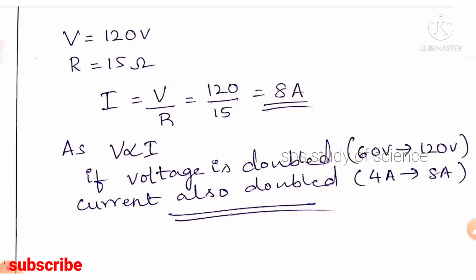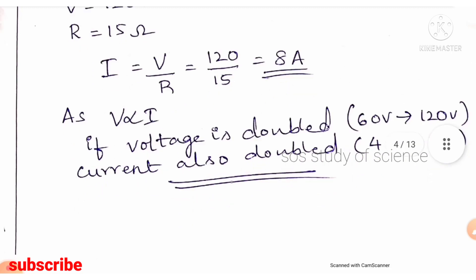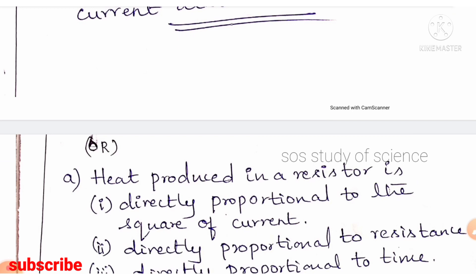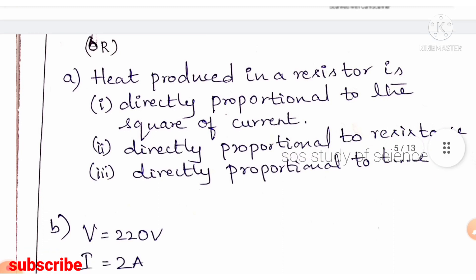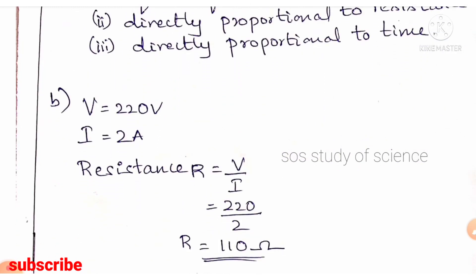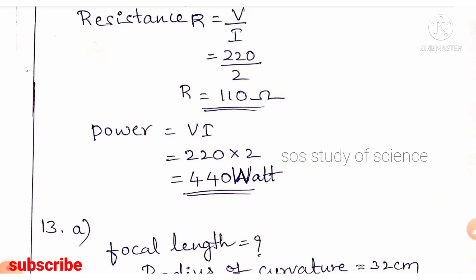Alternatively, Joule's law of heating: heat produced is directly proportional to the square of current, directly proportional to resistance, and directly proportional to time. Problem: an electric bulb connected to a 220 V generator draws 2 A. Resistance R = V/I = 220/2 = 110 Ω. Power P = VI = 220 × 2 = 440 watts. Remember to write SI units.